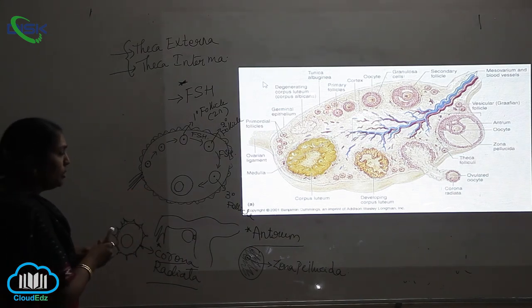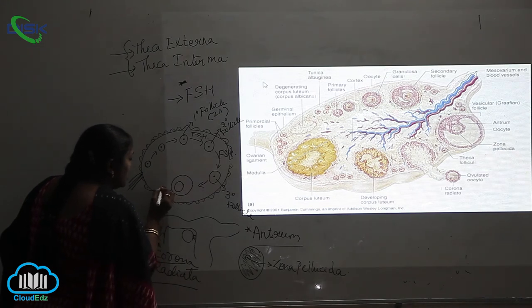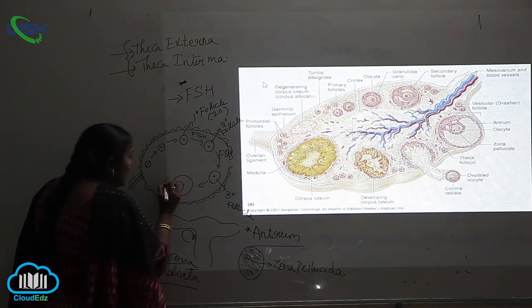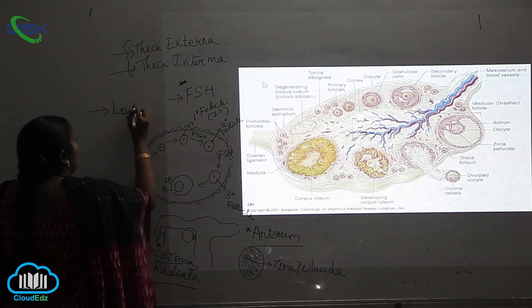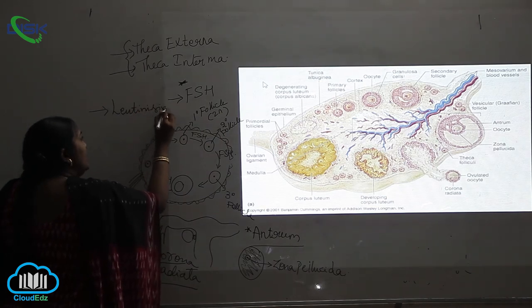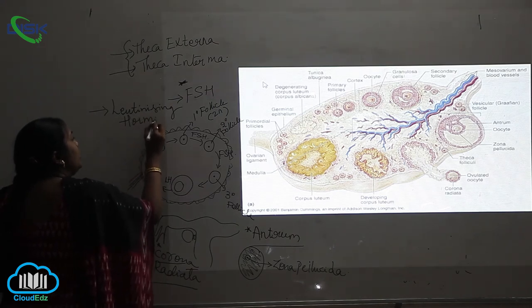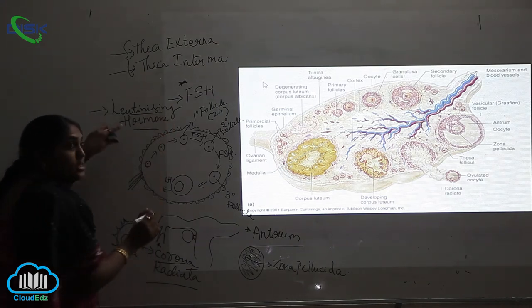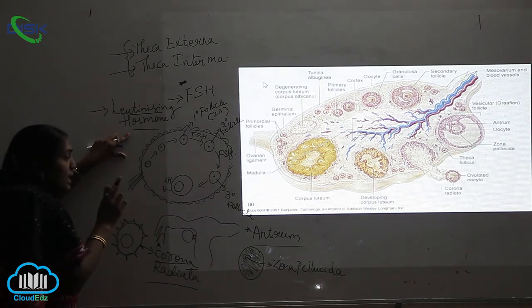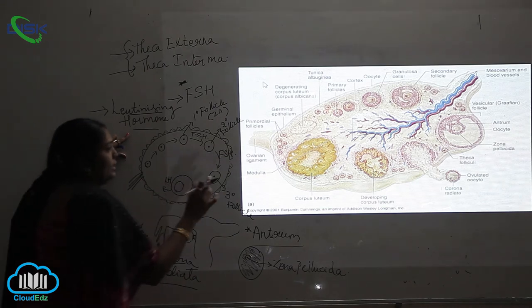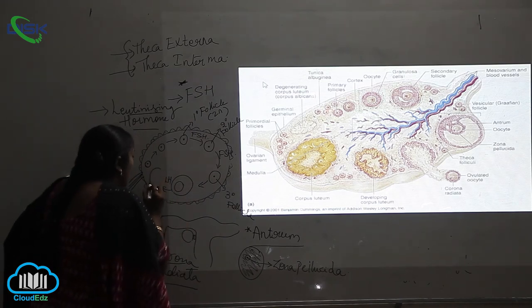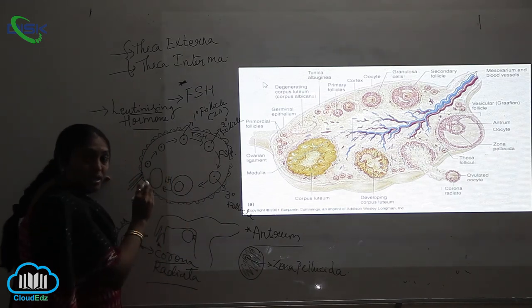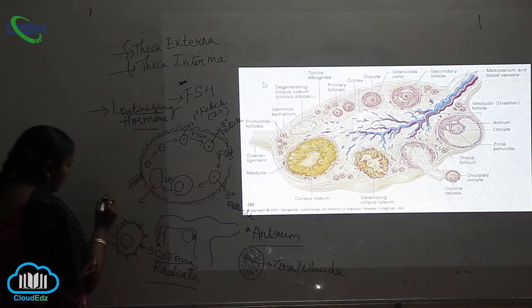After this development, in the presence of luteinizing hormone (LH) — another important hormone released from the anterior pituitary — a larger formation of the egg occurs. This ultimately forms what we call corpus luteum. LH plays a very important role in this formation.